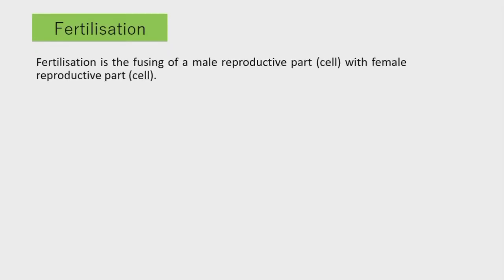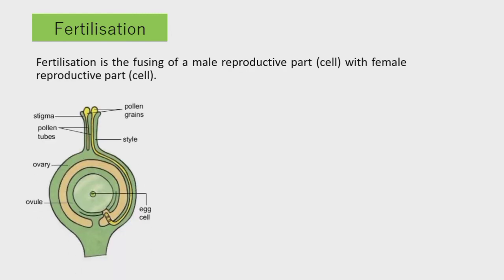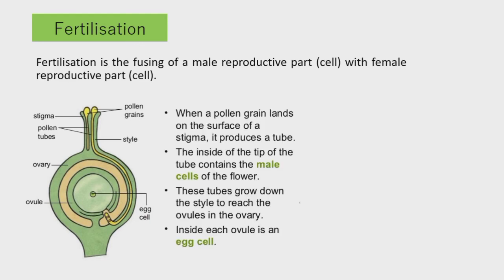Now let's discuss fertilization. Fertilization is the fusing of a male reproductive cell with a female reproductive cell. When a pollen grain lands on the surface of a stigma, it produces a tube. The inside of the tip of the tube contains the male cell. This tube grows down the style to reach the ovules in the ovary, inside each of which is an egg cell.